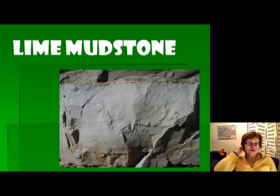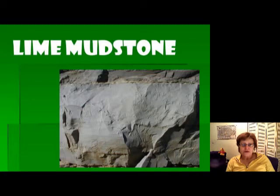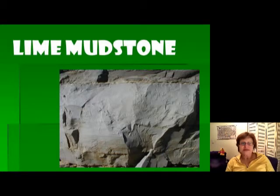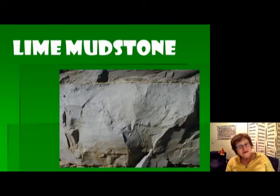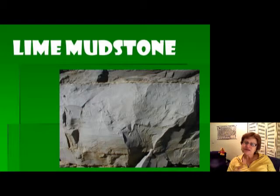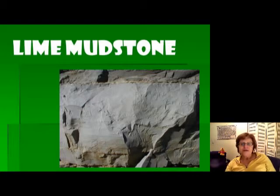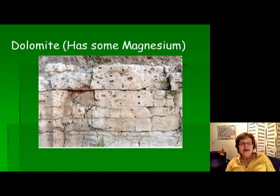The lime mudstone is very similar to the siliciclastic mudstone, but the difference is simple: every limestone fizzes when you put acid on it. So if it fizzes with hydrochloric acid, you know it's lime mudstone; if it doesn't fizz, it's regular mudstone. Don't worry about the color — it can be any color. As long as it fizzes with hydrochloric acid, you've got lime mudstone. It usually forms in a pretty deep environment.